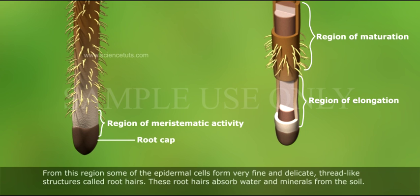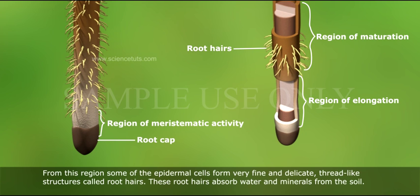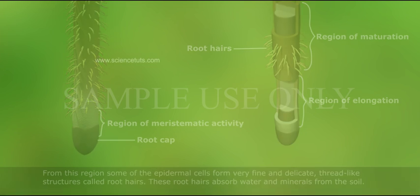From this region, some of the epidermal cells form very fine and delicate thread-like structures called root hairs. These root hairs absorb water and minerals from the soil.